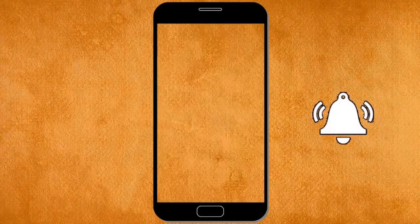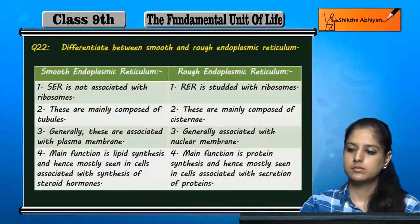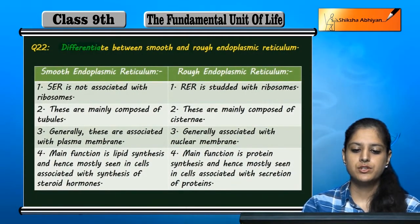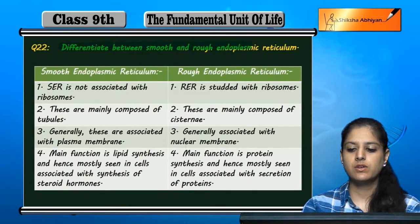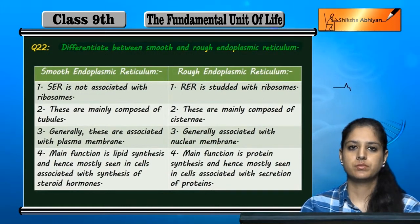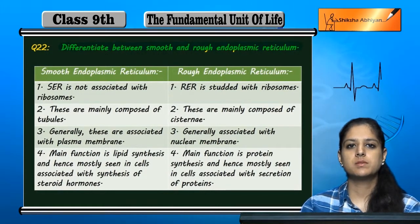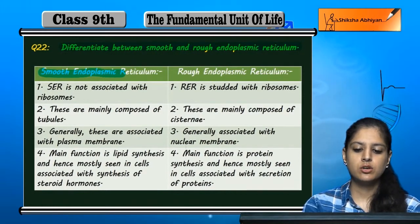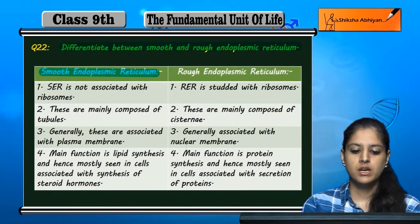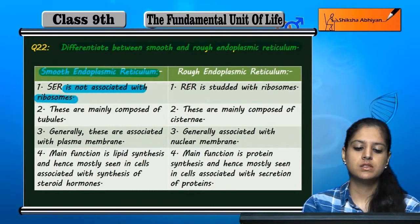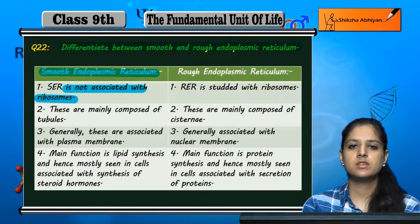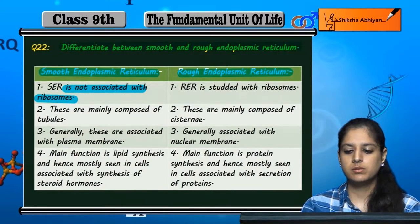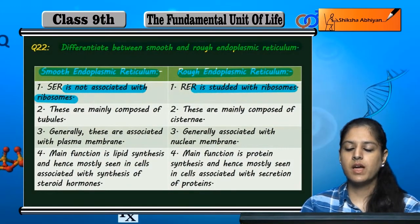Question number 22: differentiate between smooth and rough endoplasmic reticulum. The smooth endoplasmic reticulum is not associated with ribosomes, but the rough endoplasmic reticulum is studded with ribosomes on its surface.